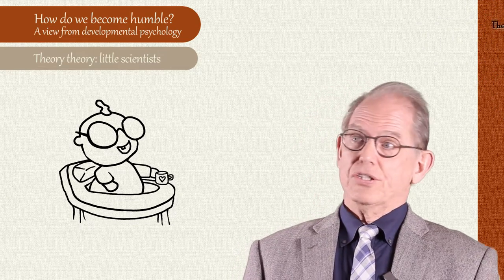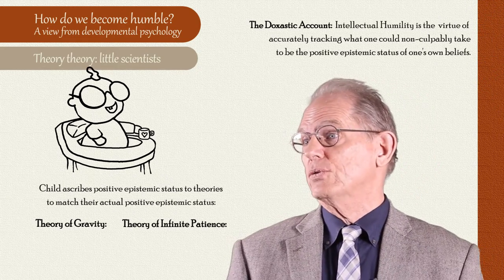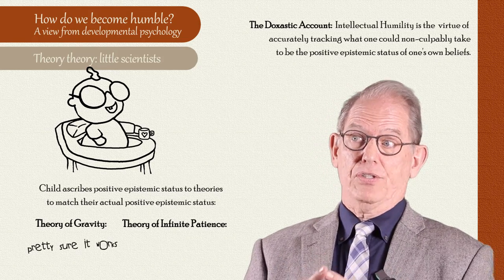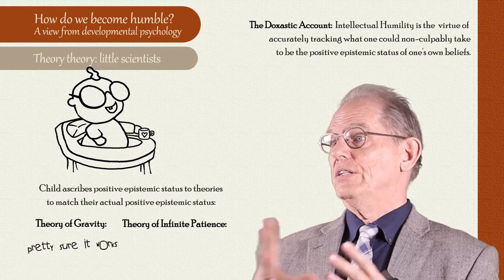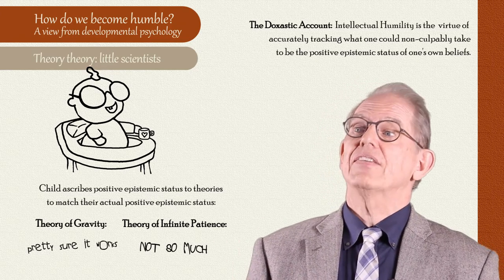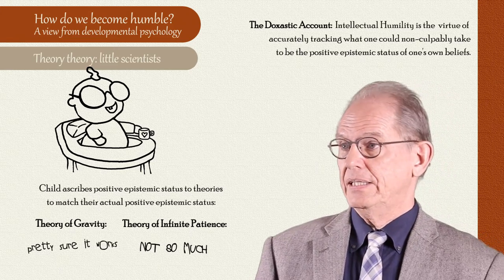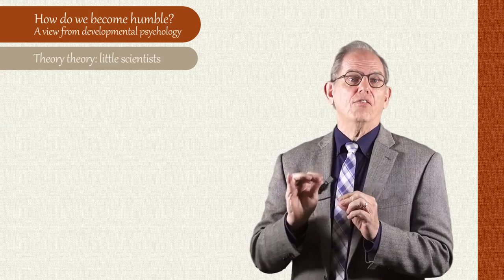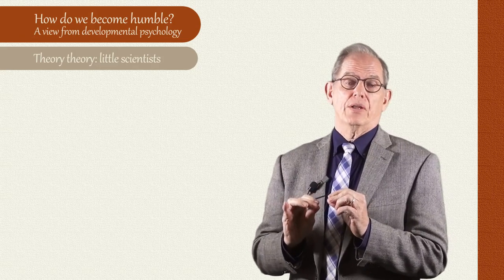So using Dr. Church's doxastic account of intellectual humility, we might say that the child holds the theory of gravity with some firmness and certainty. While the theory of the adults picking objects up, she might hold with less firmness, since the evidence of that is more spotty. This idea that learning is a process of discovering just how firmly one ought to hold theories about the world has been further refined by Gopnik and Wellman.